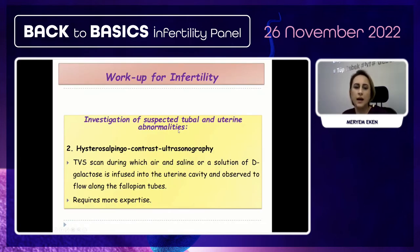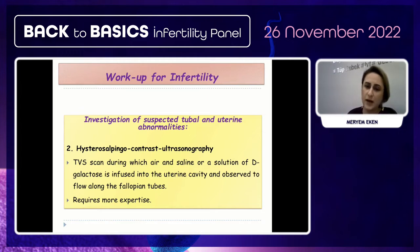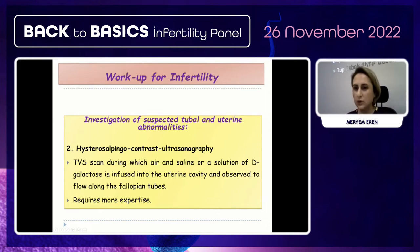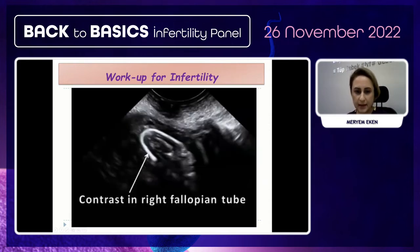Another workup option for investigating suspected tubal or uterine abnormalities is hysterosalpingo-contrast sonography (HyCoSy), though it requires more expertise. A transvaginal scan during which air, saline, or a D-galactose solution is infused into the uterine cavity and observed to flow along the fallopian tubes can be used.